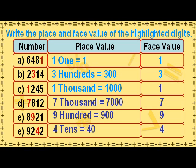The place value of 1 in the thousands place is 1000. The place value of 7 in the thousands place is 7000. The place value of 9 in the thousands place is 9000. The place value of 4 in the tens place is 40.